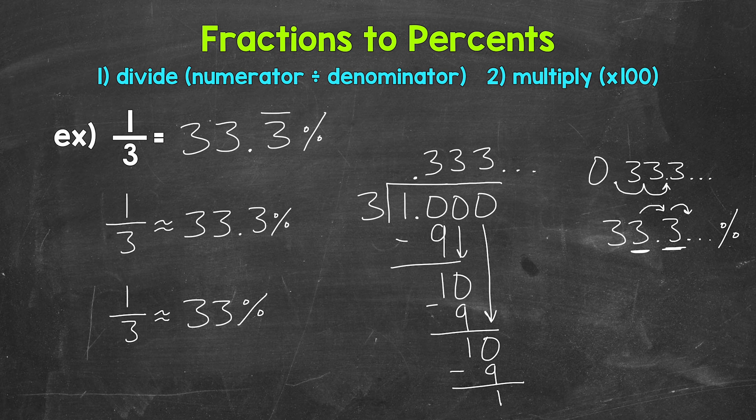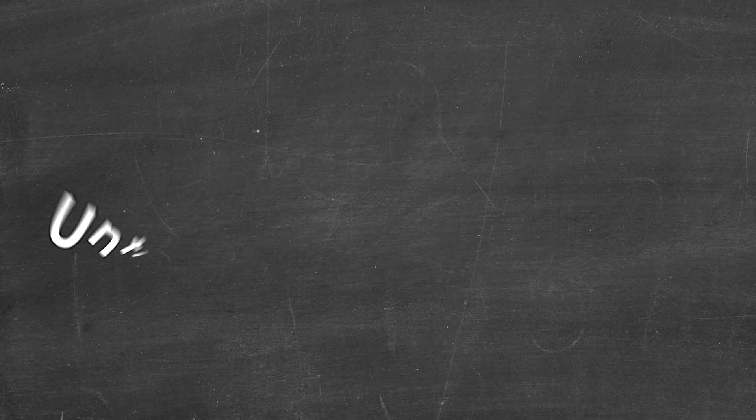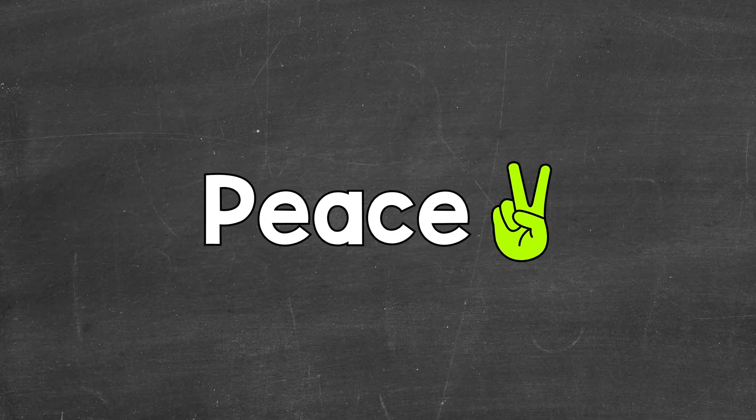So some different options there as far as writing out repeating decimals as percents. We can use a bar above any repeating digits to show that they are repeating or we can round. So there you have it. There's how to convert one third to a percent. I hope that helped. Thanks so much for watching. Until next time. Peace.